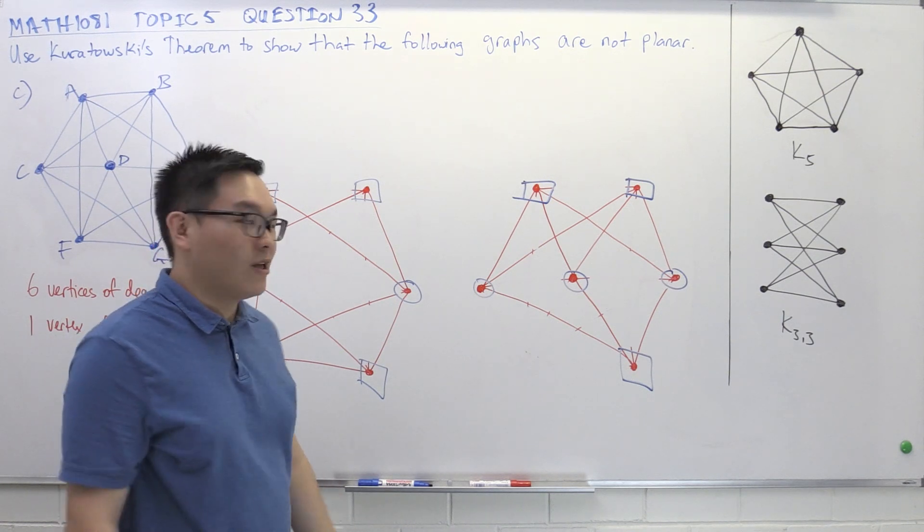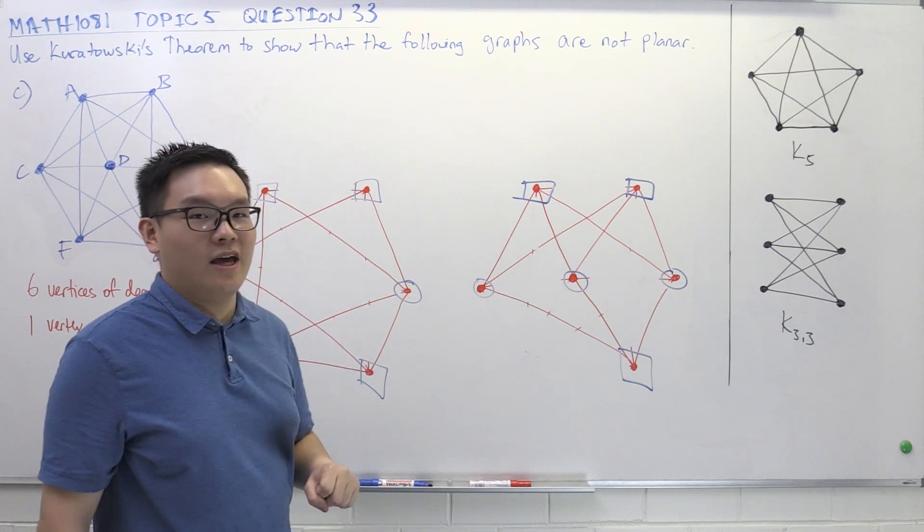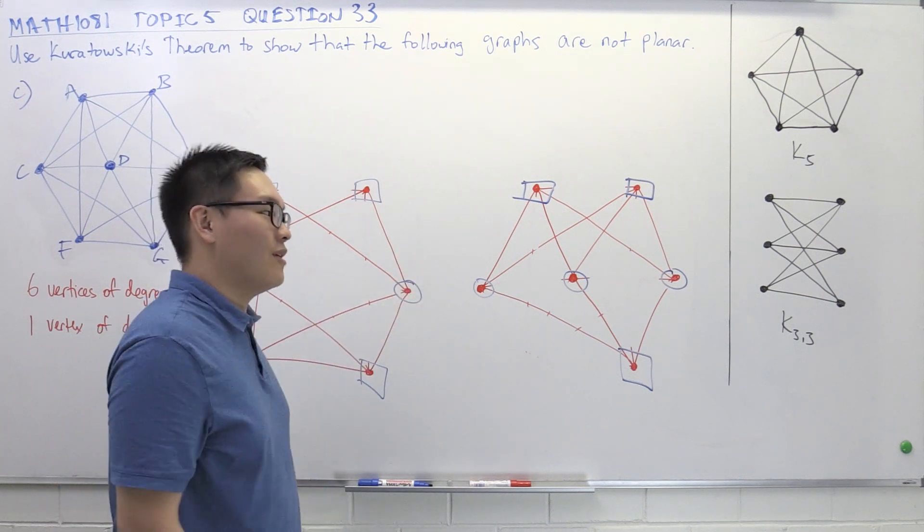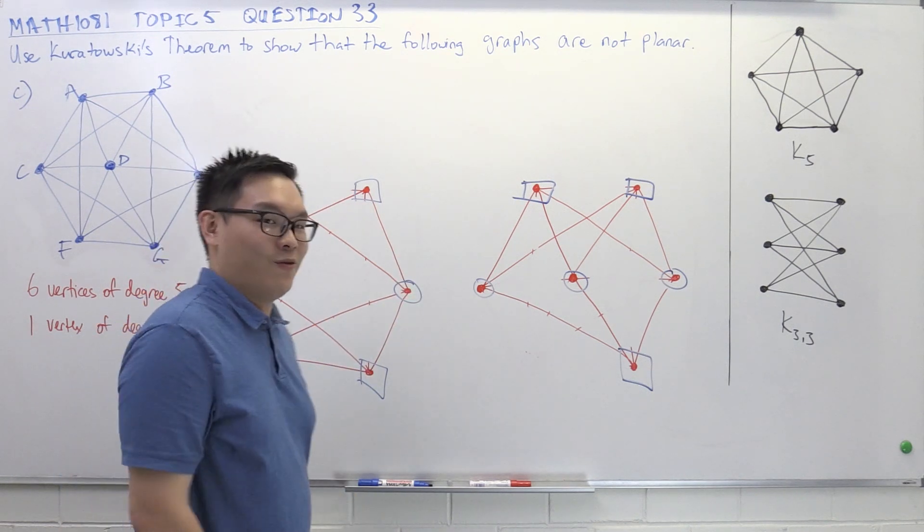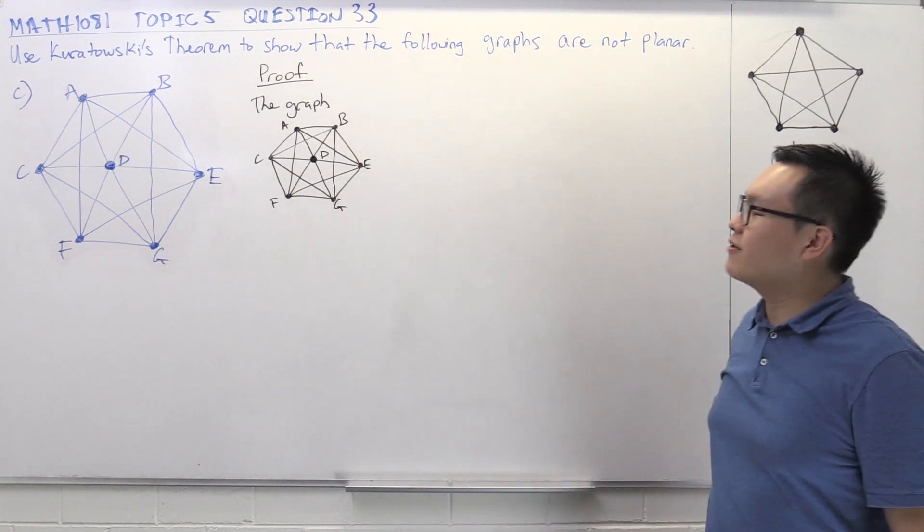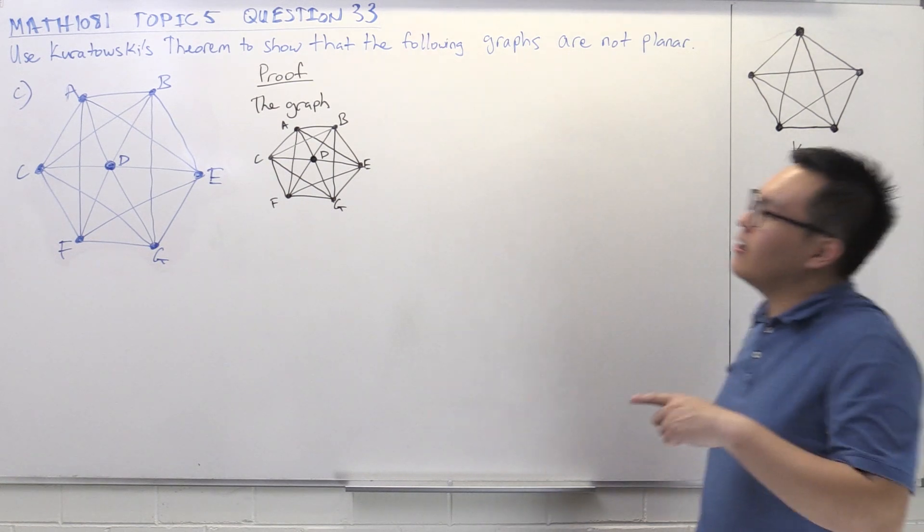So now we know the trick. We've got to remove one of the outer vertices, and we will be left with K33. Then we remove some edges, and then we'll be left with K33. So now we can write up the proof. So this graph is the graph we're working with. Now the first step was to remove one of the outer vertices, and in our rough working, we chose F.